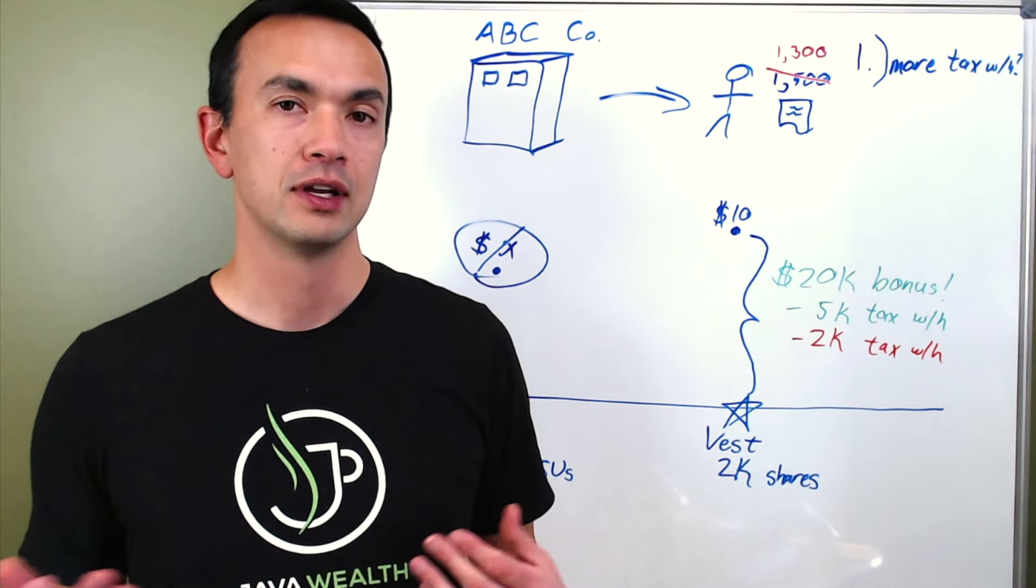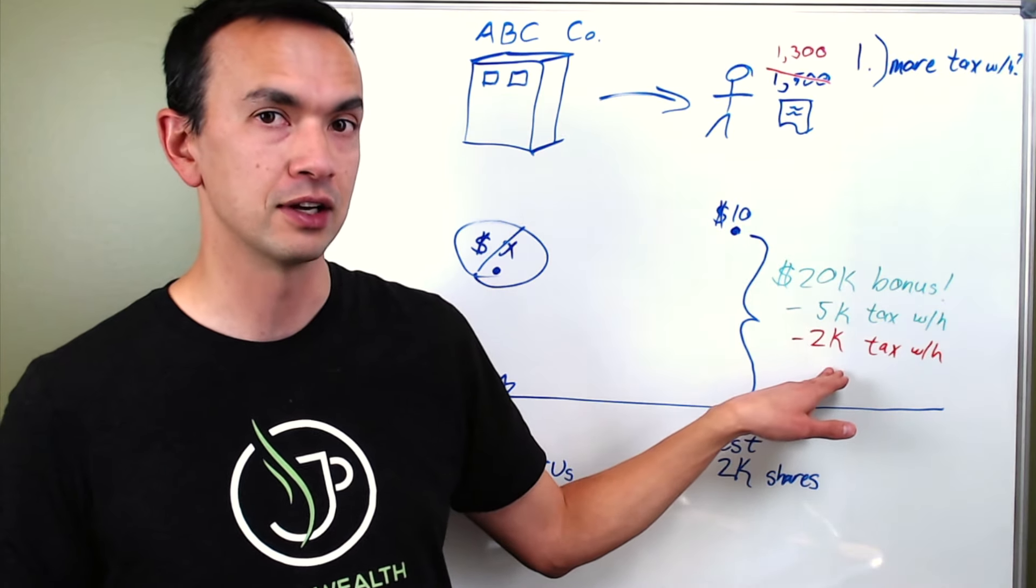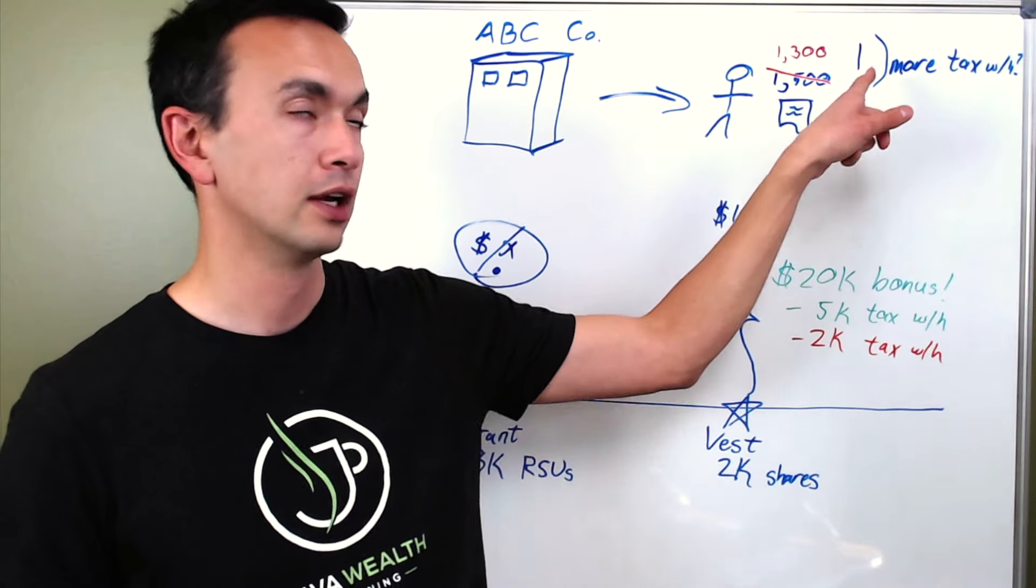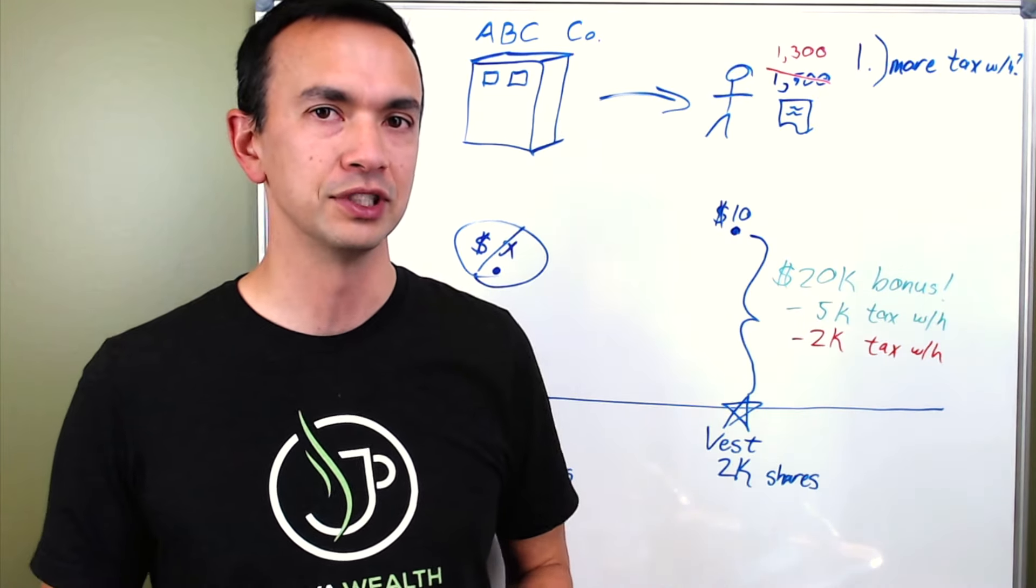So what we did in order to withhold more taxes that to withhold this another $2,000 is that we sold 200 shares. And so now we're left with 1,300 shares.